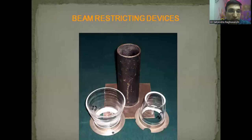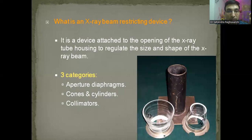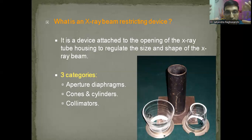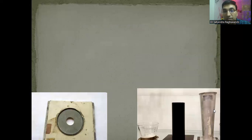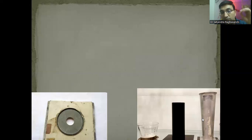Beam restricting devices: you might find a cone, cylinder, or aperture diaphragm on the table viva. A beam restricting device is a radiographic device attached to the opening of the x-ray tube housing which regulates the size and shape of the x-ray beam. It is divided into three categories: aperture diaphragm, cones and cylinders, and collimators. When you see such an item, say: 'Sir, this is a cone type of beam restricting device. It is used to prevent scatter radiation and hence improve image contrast.' Its function is to prevent scatter radiation and reduce patient exposure.